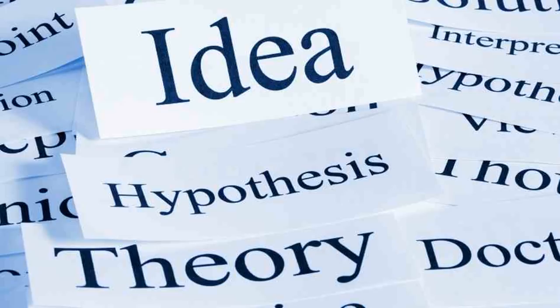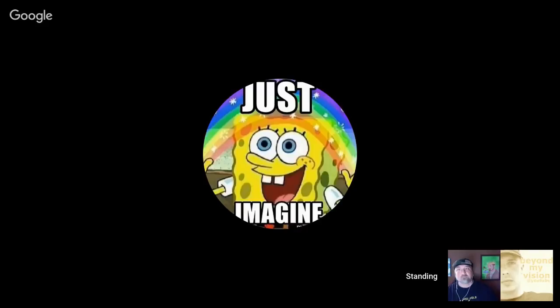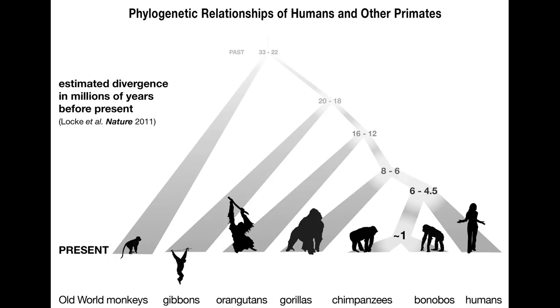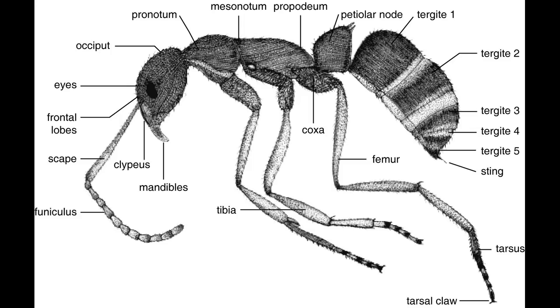As we've mentioned on this channel before, the hallmark of a good theory is its ability to make predictions. Anyone can make up an ad hoc rationalization to explain away data that contradicts a particular model, but not every model can be used to make accurate predictions about future data. If the evolution of all organisms from a set of common ancestors is true, then we should be able to test that. As it happens, we can.